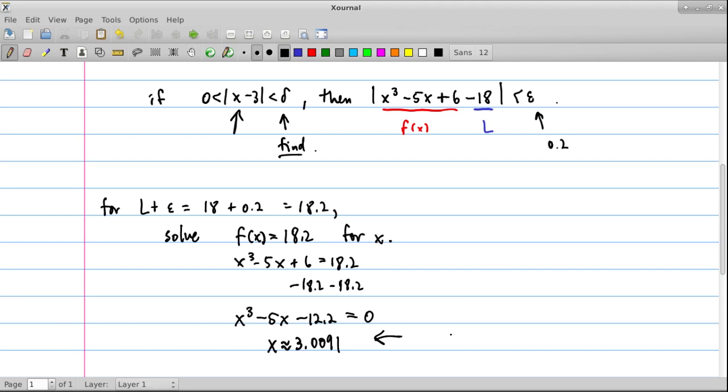So from here, what we obtain is that 3.0091 minus 3, this is going to be equal to the delta for this scenario, because our epsilon is equal to 0.2. And this is equal to about 0.0091. So this is one candidate for our delta.